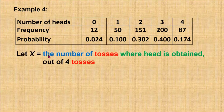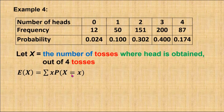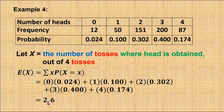X can be defined as the number of tosses where a head is obtained out of 4 tosses. From the table, we use the formula E(X) = Σ x · P(X = x) to find the mean. So: 0 × 0.024 + 1 × 0.100 + 2 × 0.302 + 3 × 0.400 + 4 × 0.174, and when calculated, the answer is 2.6.